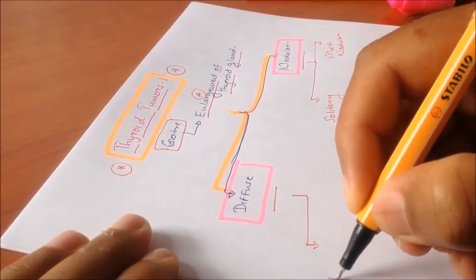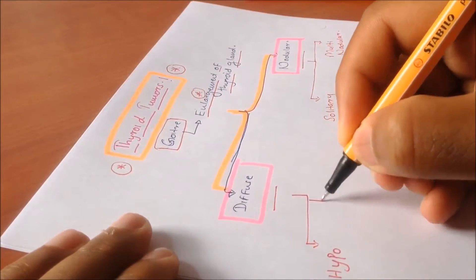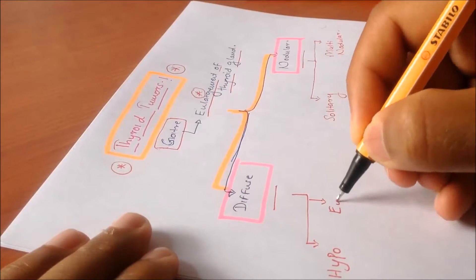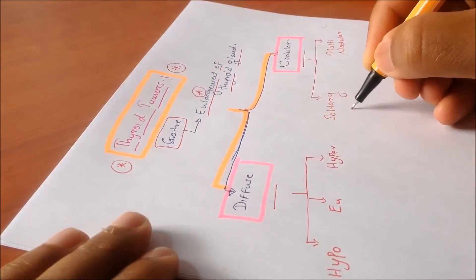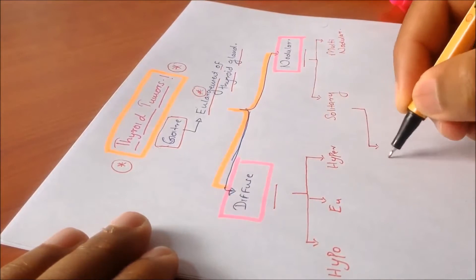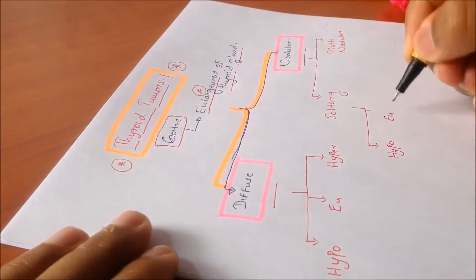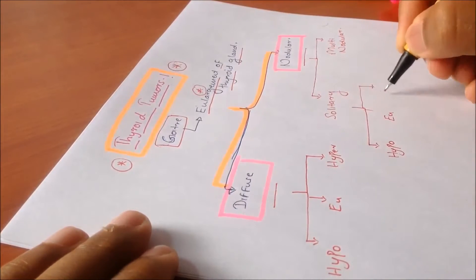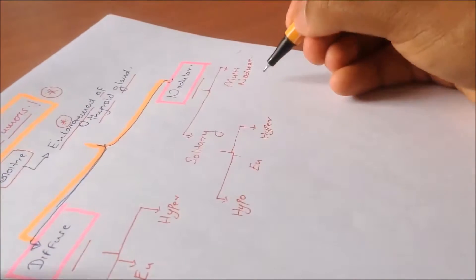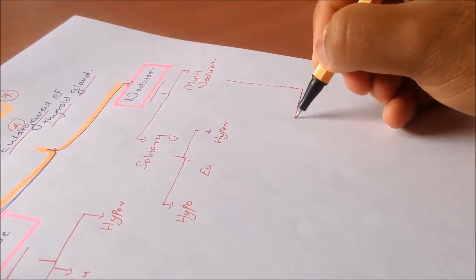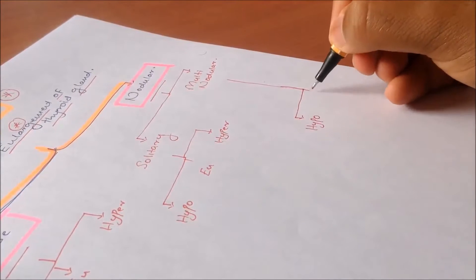All these goiters can be divided according to thyroid function — they can be either hypothyroid, euthyroid, or hyperthyroid. This applies to the solitary nodule and to the multinodular goiter as well. In all cases, thyroid function matters.